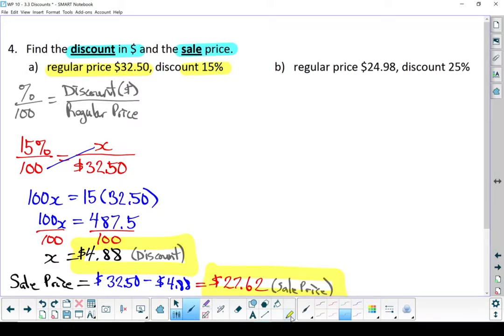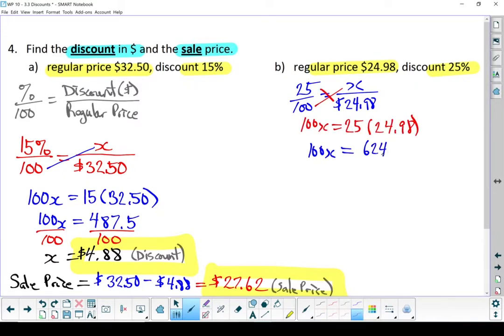Let's go through one more example. Regular price $24.98 with a discount of 25%. How much money do you save, and what is your sale price? And I end up saving $6.25.